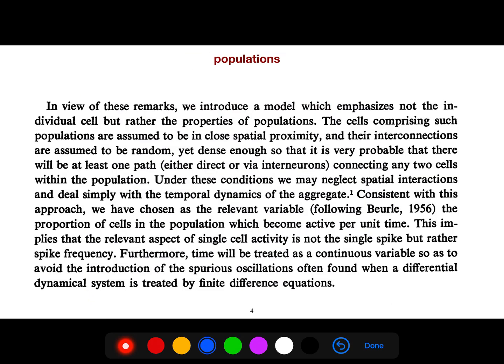We introduce a model which emphasizes not the individual cell. This is a mistake because we have 85 billion neurons, although some of them are active, but still it's computationally prohibitive. So let's see this new approach.